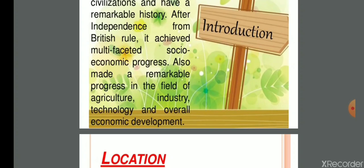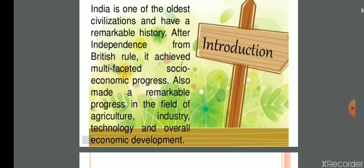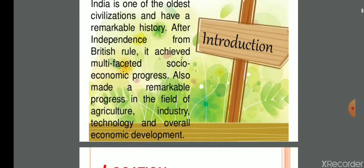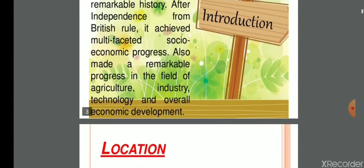Bharat sansar ki atyant prachin sanskritiyon mein se ek hai. Pichle pachas varshon se Bharat ne samajik aur arthik roop se cahumukhi pragati ki hai. Takniki, krishi, udyog aur sarvangin arthik vikas ke shetra mein Bharat ne adbhut pragati ki hai. Bharat ka vishwa itihas mein kafi mehetpurn yogdan raha hai.